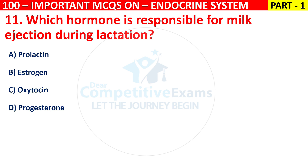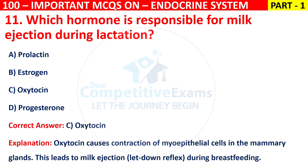The right answer is C, that is oxytocin. Oxytocin causes contraction of myoepithelial cells in the mammary glands. This leads to milk ejection — the let-down reflex — during breastfeeding.